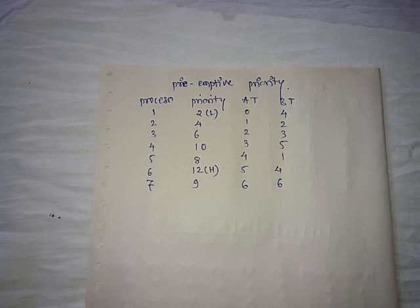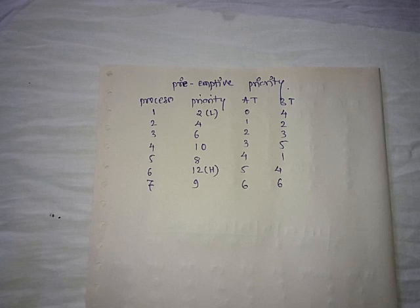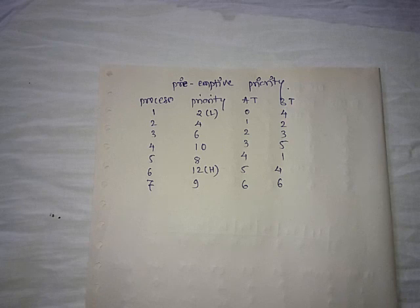In preemptive scheduling we can break the execution at any time. We break execution because it might happen that the process which we are currently running has a new process arriving with higher priority than the currently running process. So naturally we have to stop the currently running process and give priority to the highest priority process.